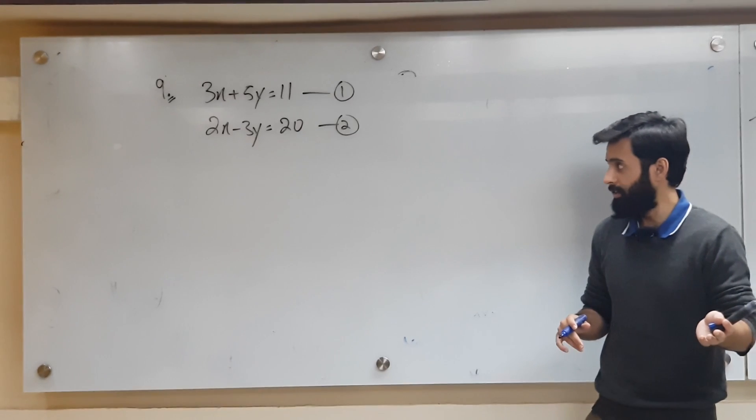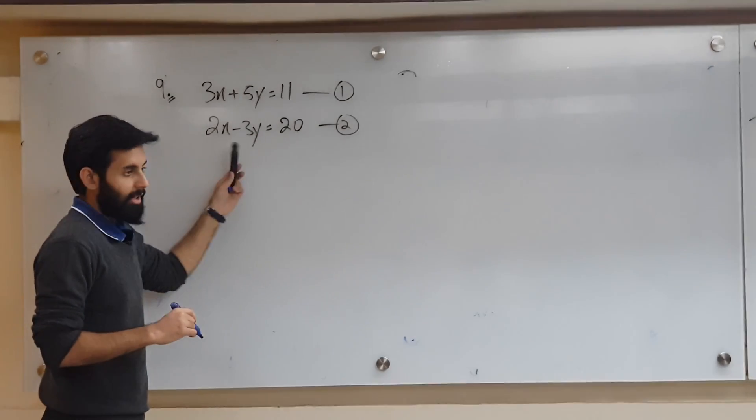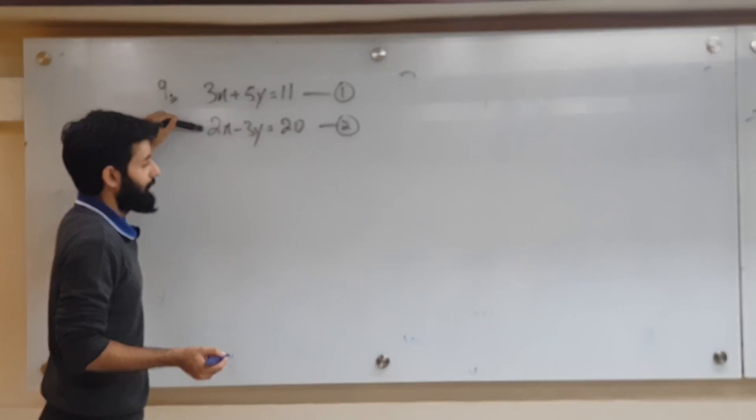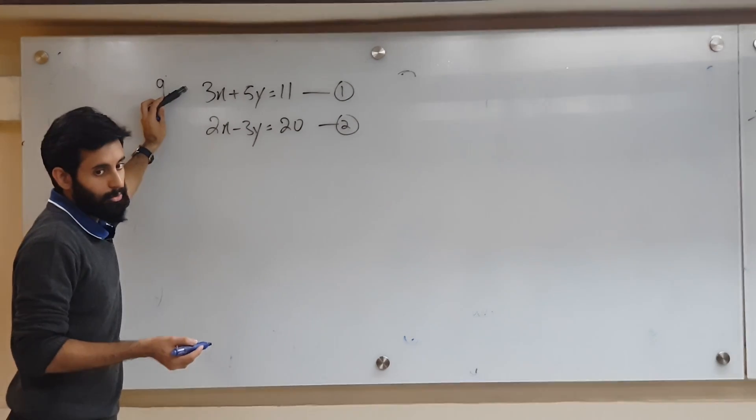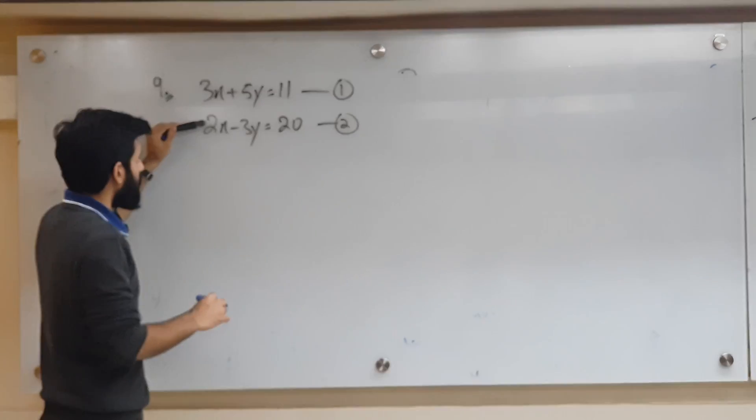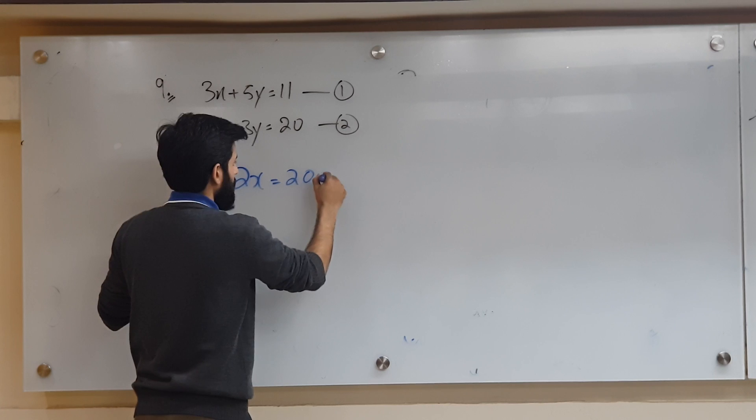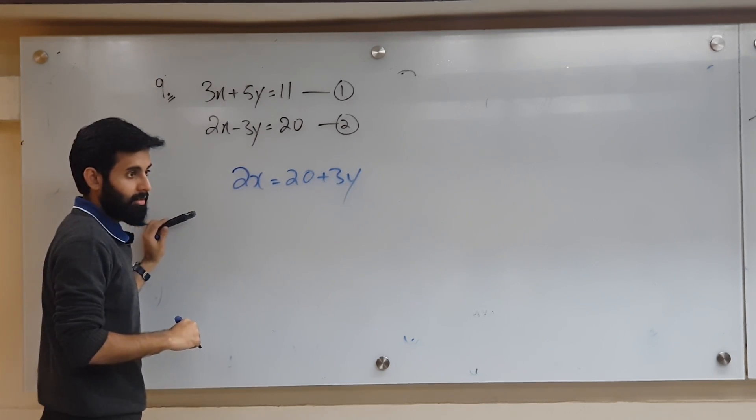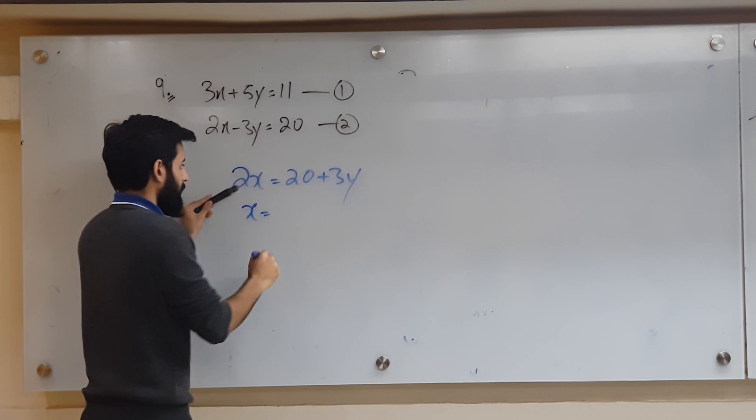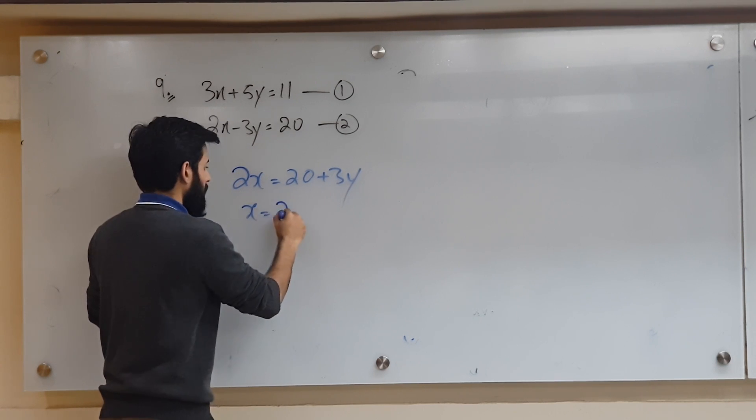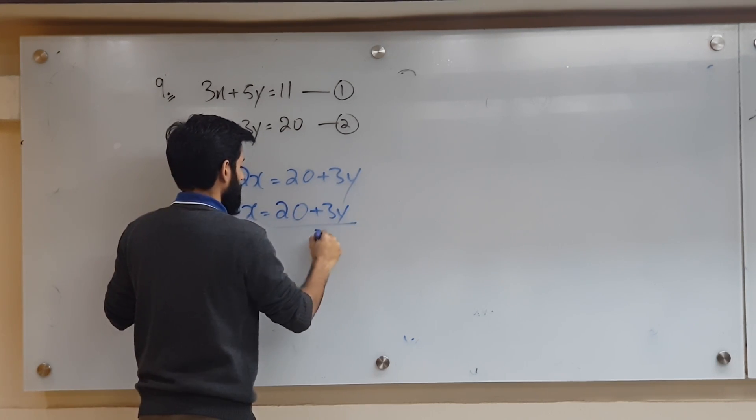I've decided to solve this by substitution. Now suppose I decide to take equation number 2 and make x the subject. I take the simpler of the two equations. Now here we have no simpler equation because every equation here has x's coefficient or y's coefficient which is other than 1. So from equation number 2 I make x subject. What do I end up with? 2x equals to 20 plus 3y. If I divide by 2 for x, what will it be? 20 plus 3y upon 2.